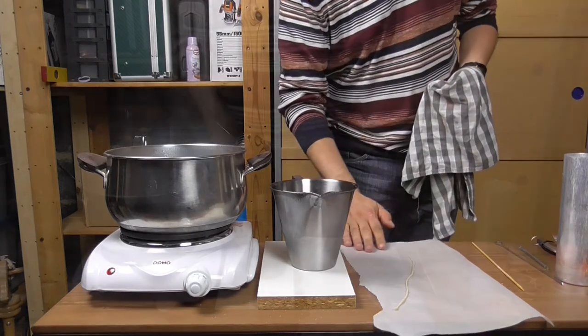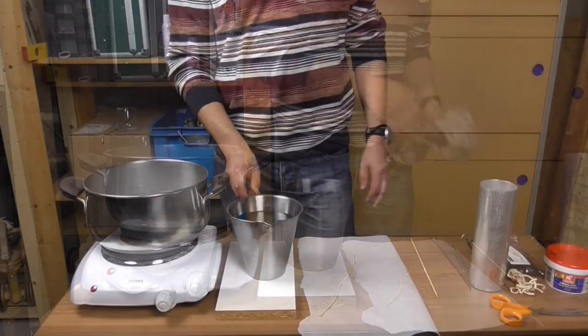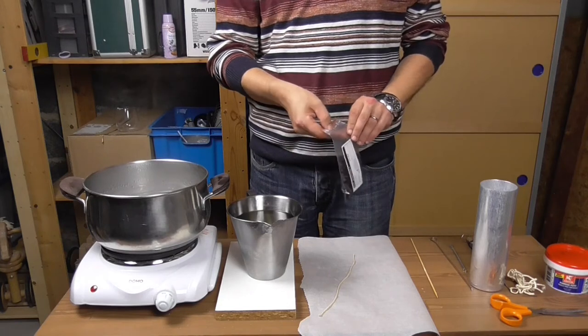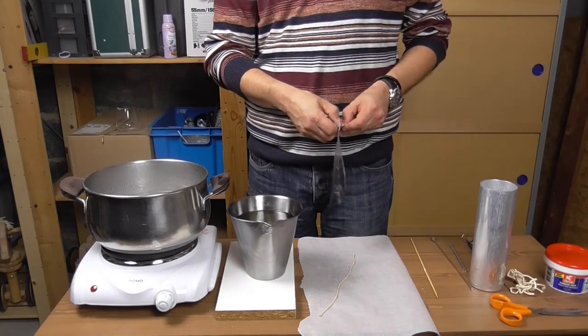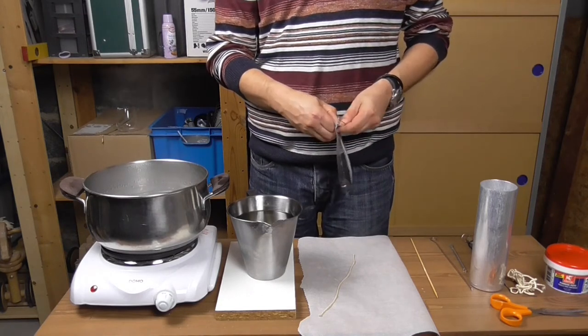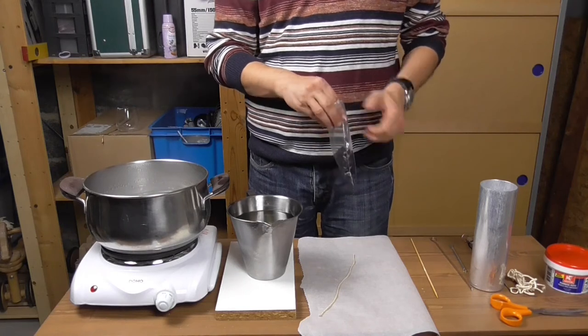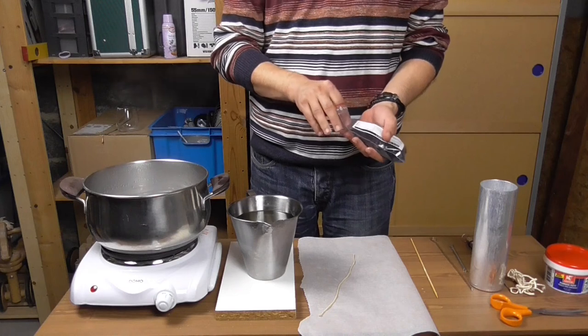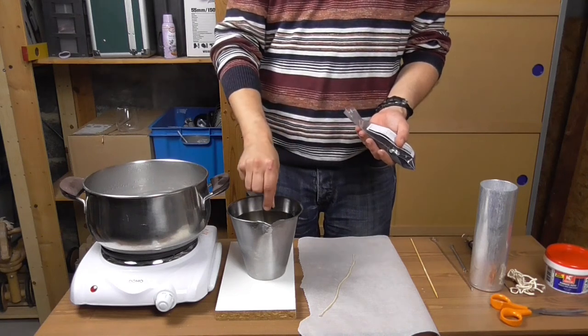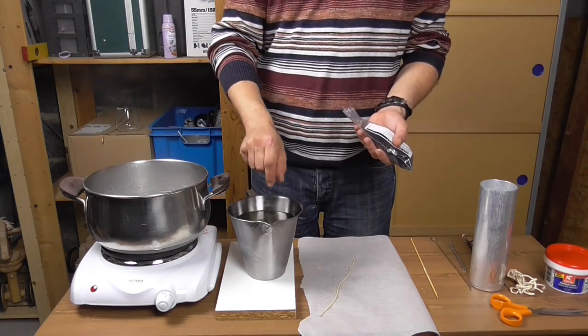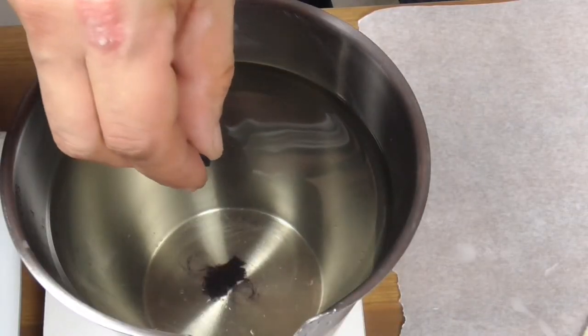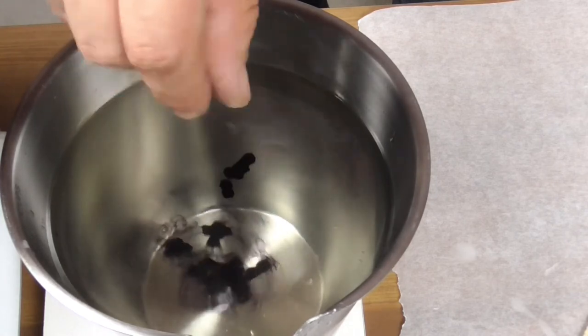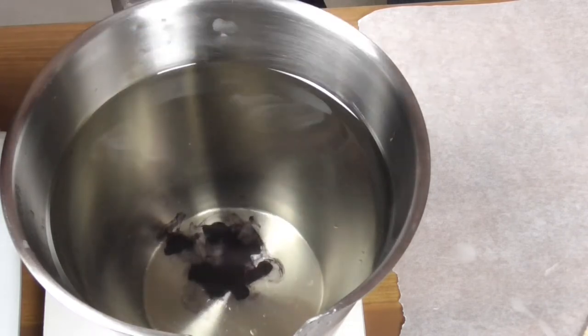At this temperature, the wax is too hot to pour into the mold, but it's the ideal temperature to add your choice of dye. Go easy on the dye. It is extremely concentrated and a small amount is enough to color a large amount of paraffin wax. Add the dye flake by flake or drop by drop if you use liquid dye. It's much easier to add more if necessary than remove it.